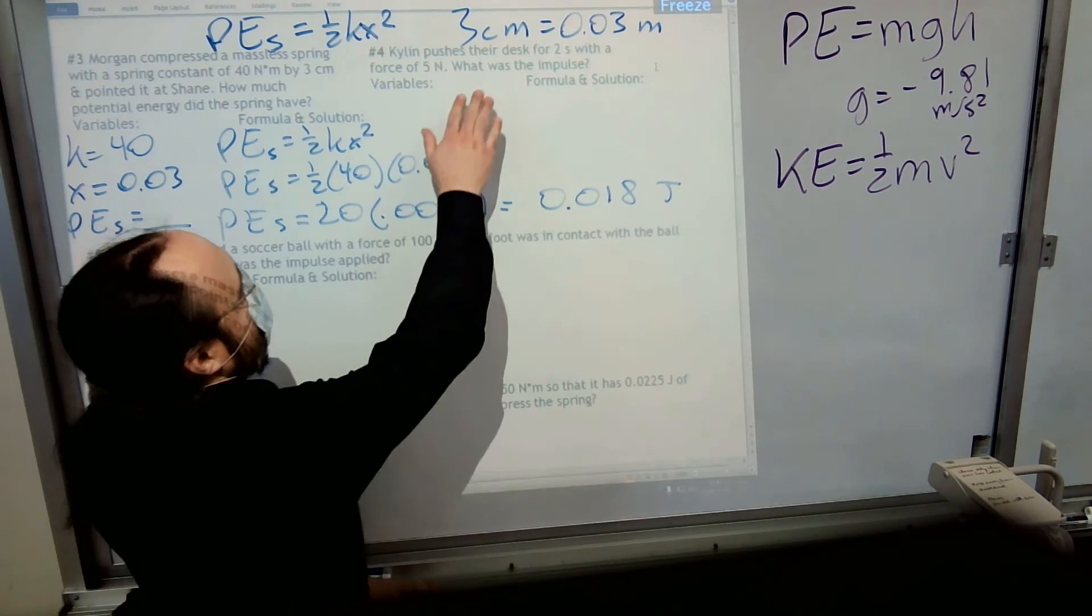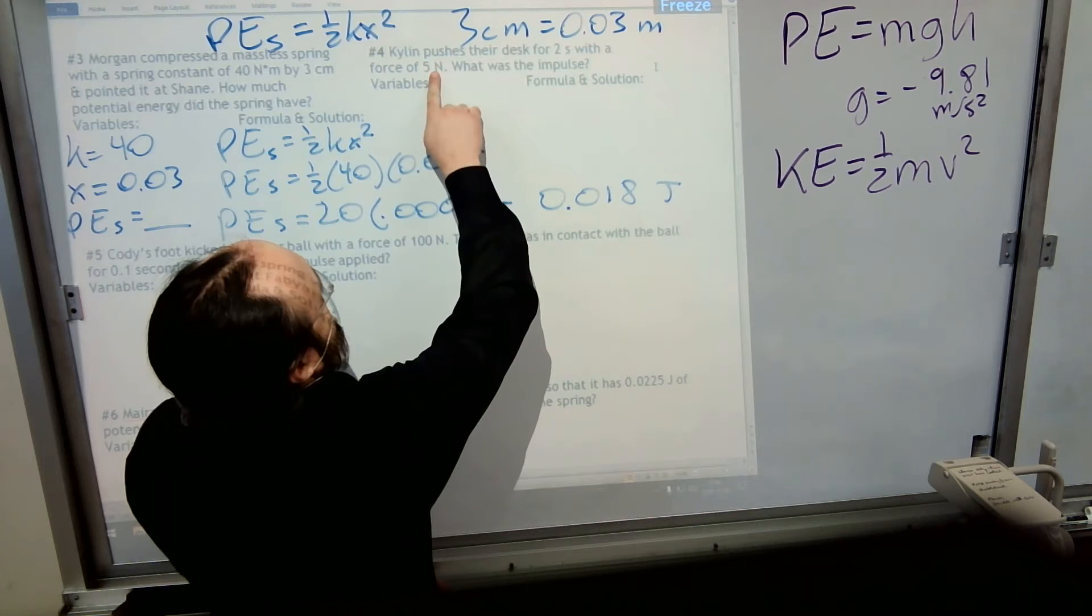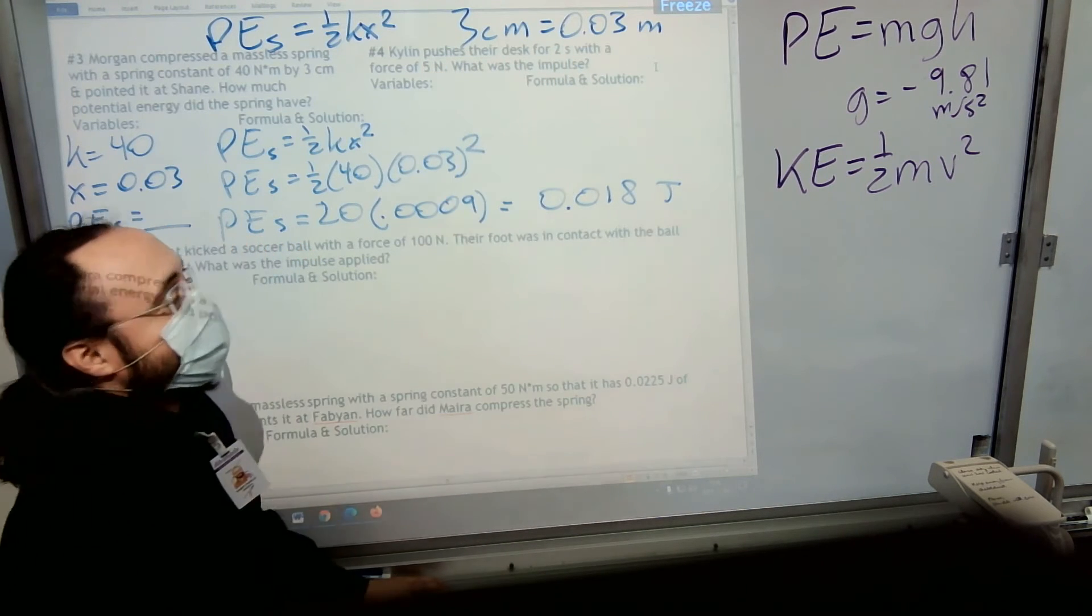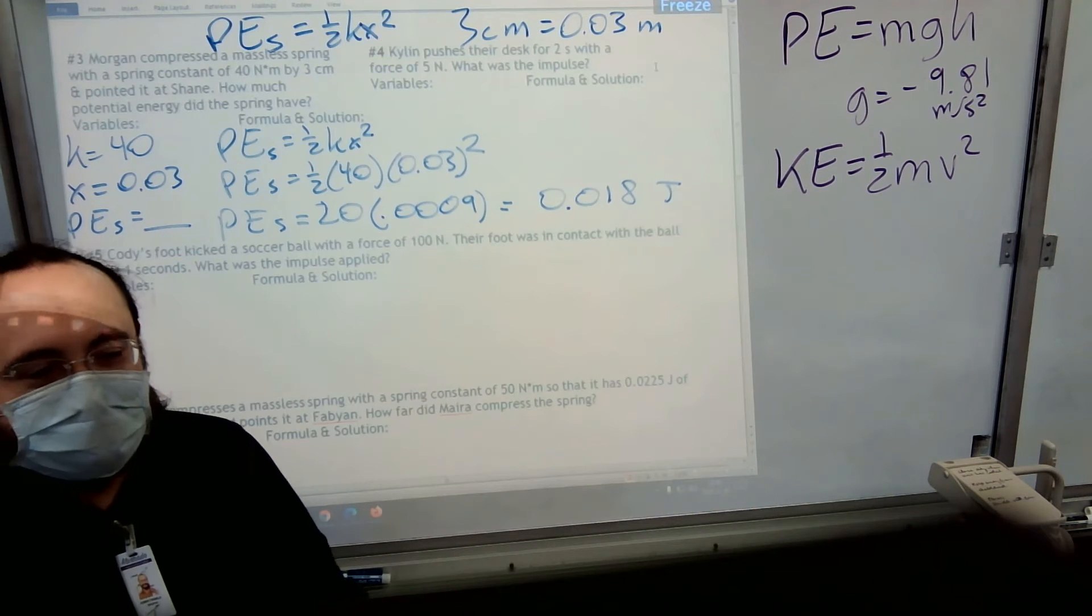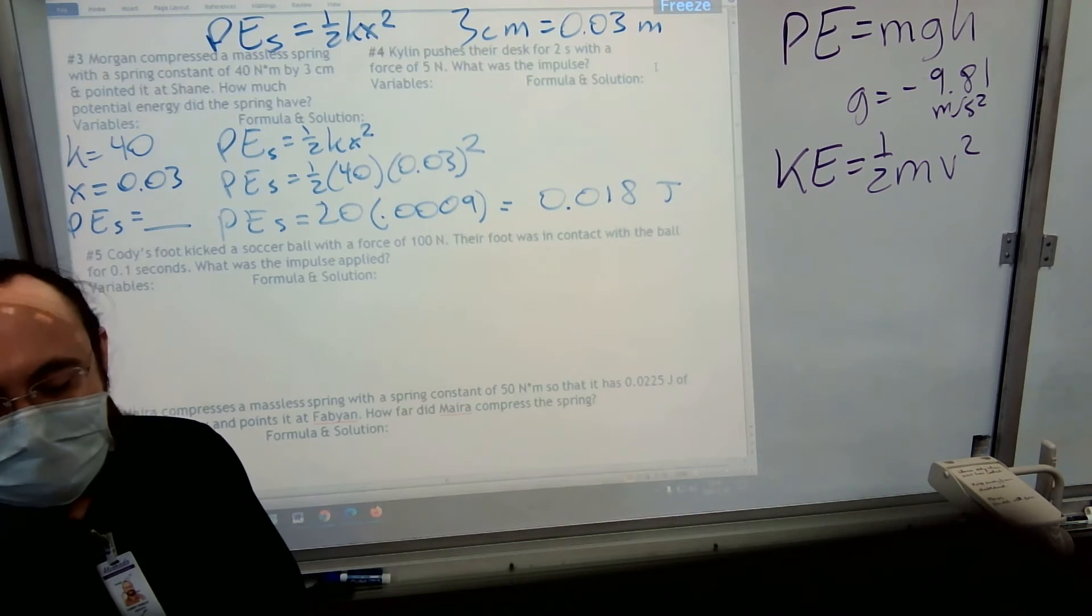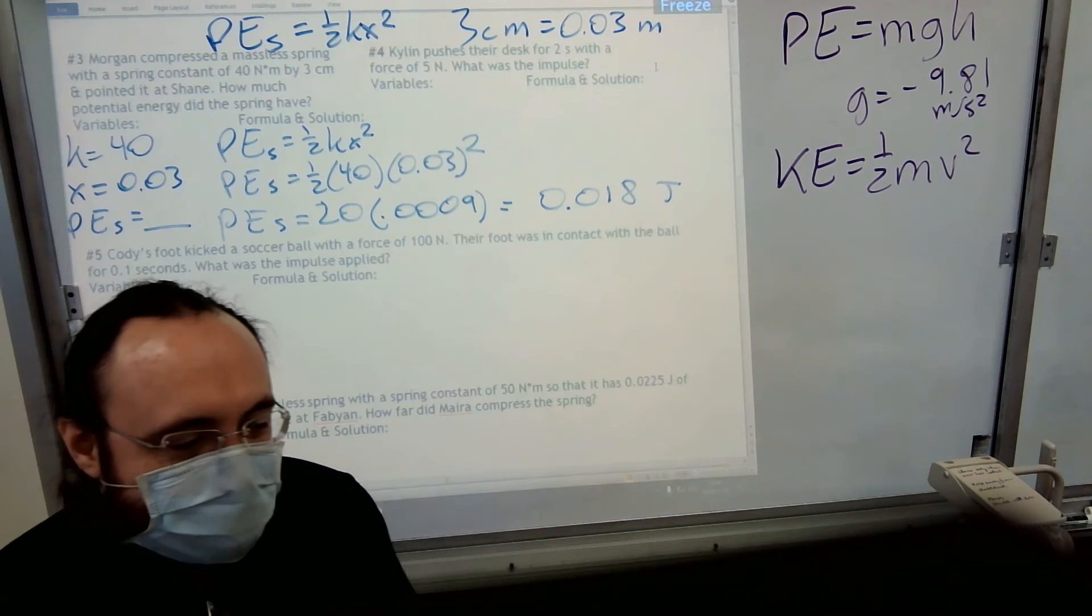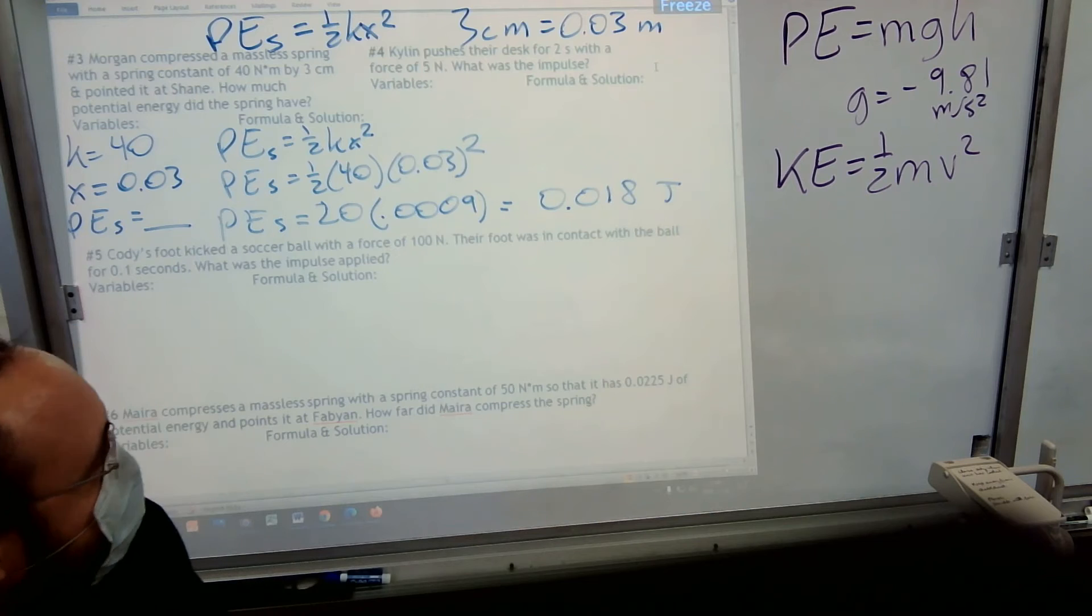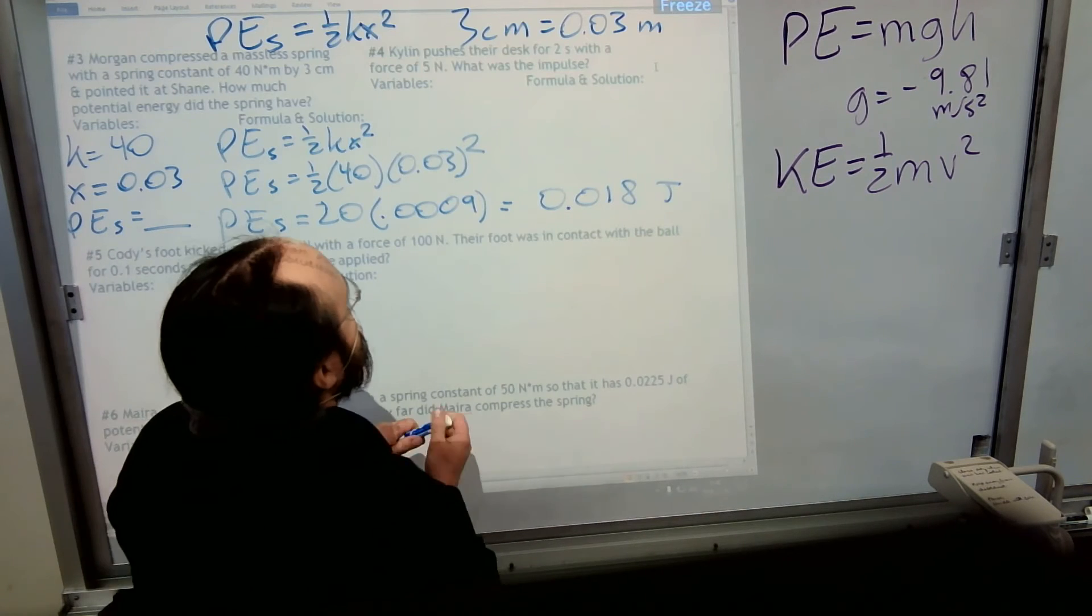So to figure out this impulse, let's see, force times time. So five newtons times two seconds makes ten newton seconds. So they didn't make up a fancy unit for that. The unit for impulse is newtons seconds, because it's force times time. So I can write that down for you.